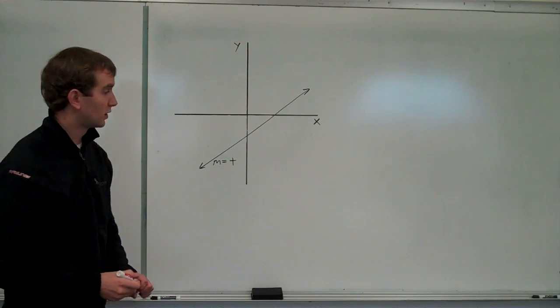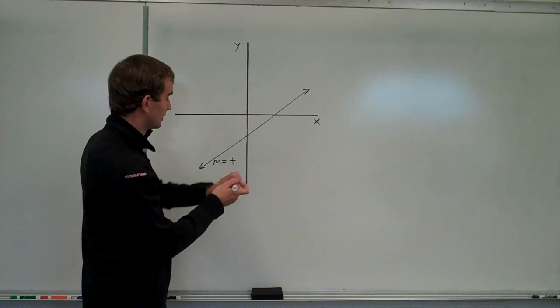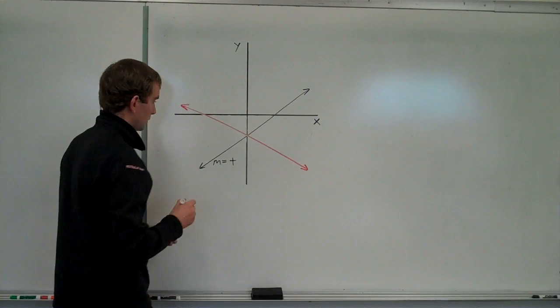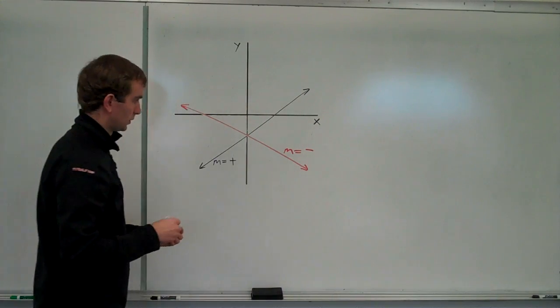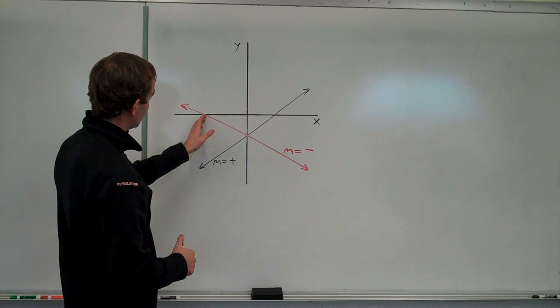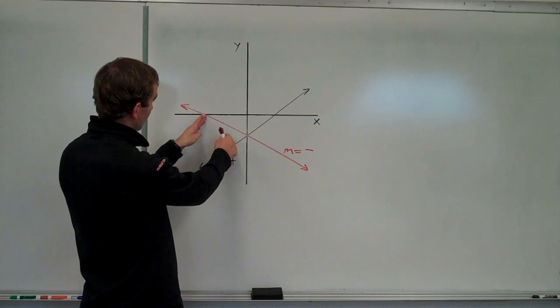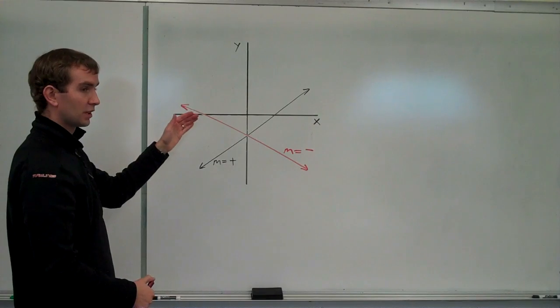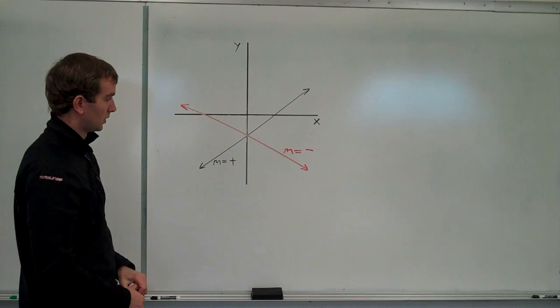Now, we can also have negative slopes. That's going to be when the line is going downward as we go from left to right, for example. My red line here will have a negative slope. And we know that because as we go from one point to another on this line, our rise will be negative and our run will be positive. So, that will be a fraction. Rise over run will be a negative number over a positive number. So, our slope has to be negative.